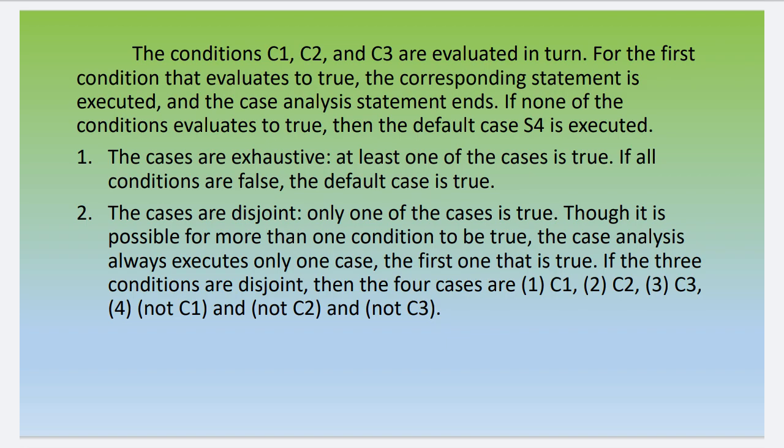Suppose more than one case could be true — the first matching case statement is executed. If the three conditions are disjoint, then the four cases are c1, c2, c3, and the else/default. In this case analysis, the else part executes when none of c1, c2, or c3 is true. That is the fourth case — not c1, not c2, not c3, so the else part executes.